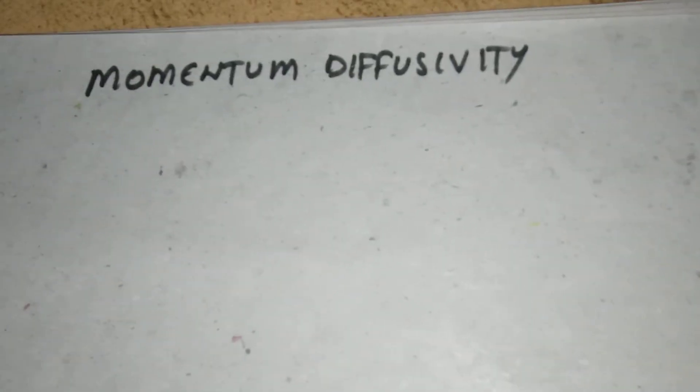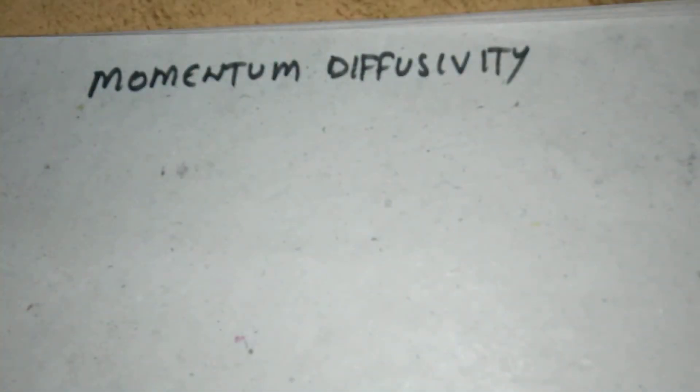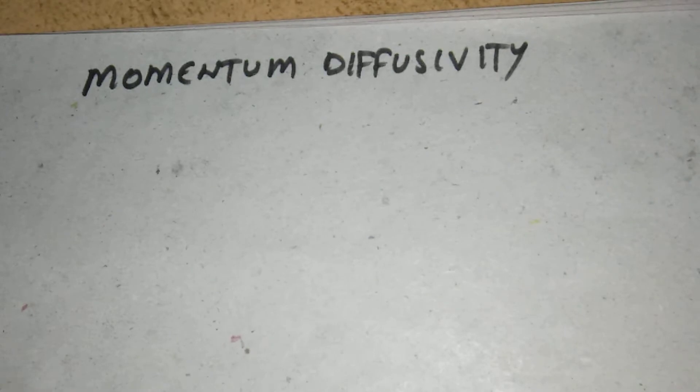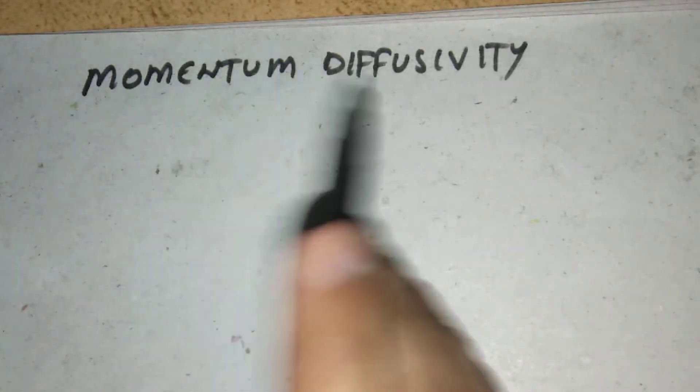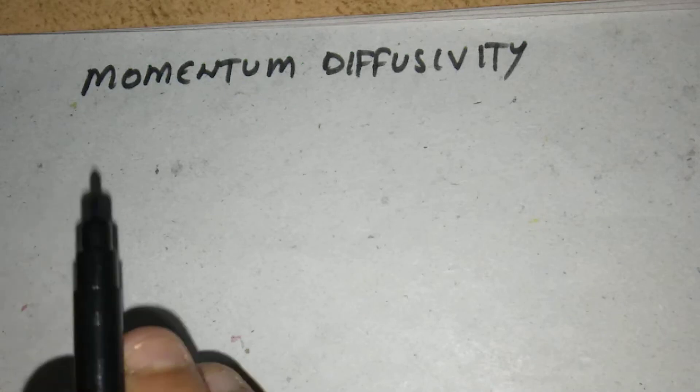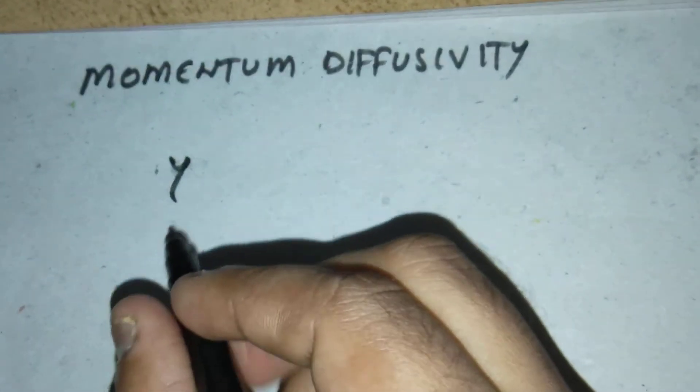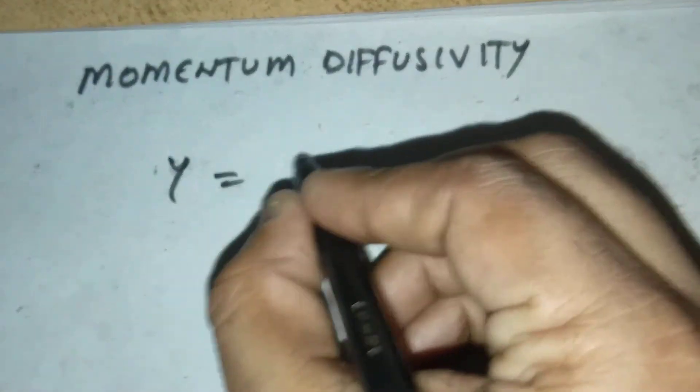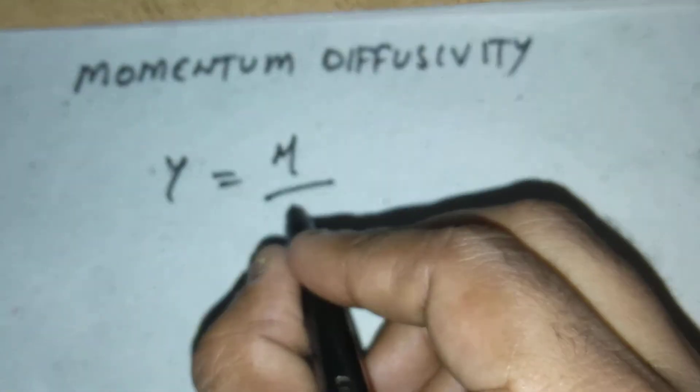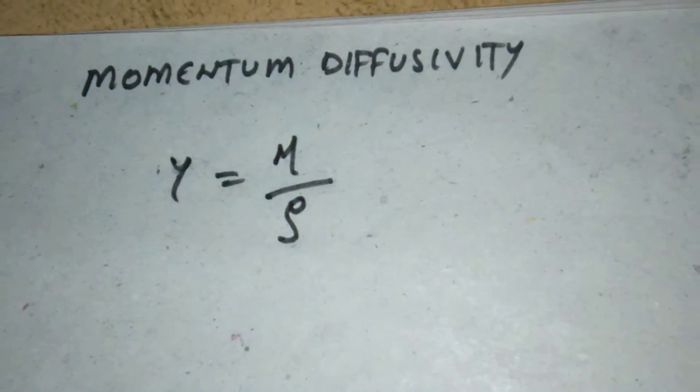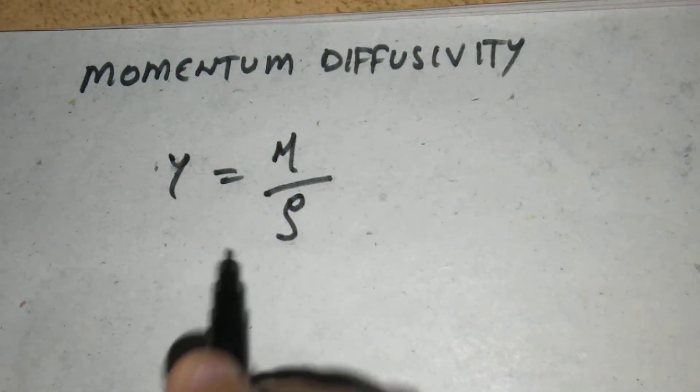First one, what is momentum diffusivity? The significance is that it is the measure of how fast momentum will transfer. So that is gamma, kinematic viscosity. Another name of momentum diffusivity is kinematic viscosity. That's equal to dynamic viscosity divided by density. This is momentum diffusivity.